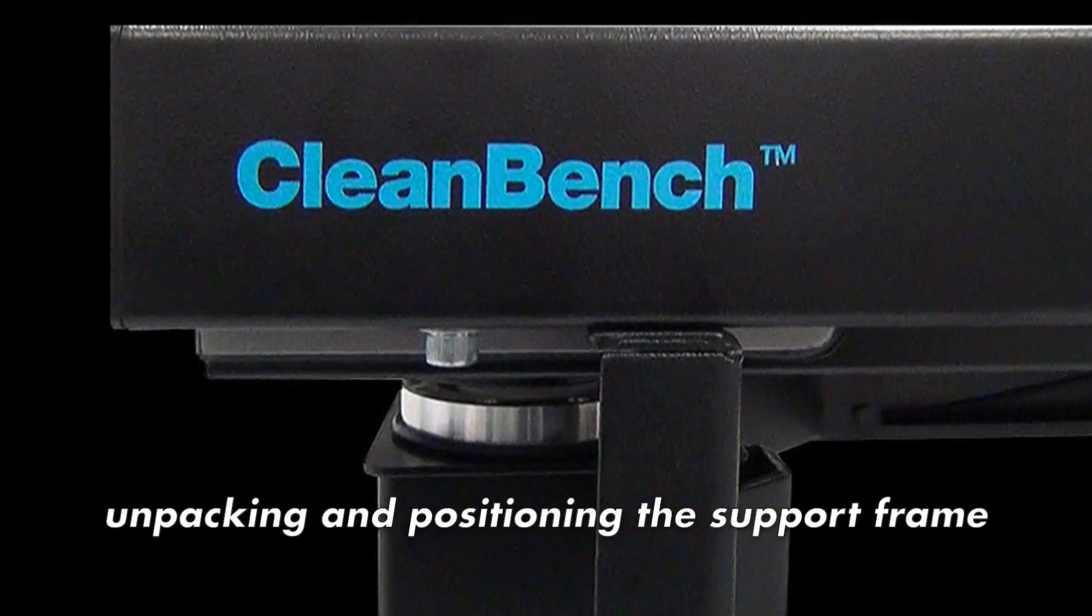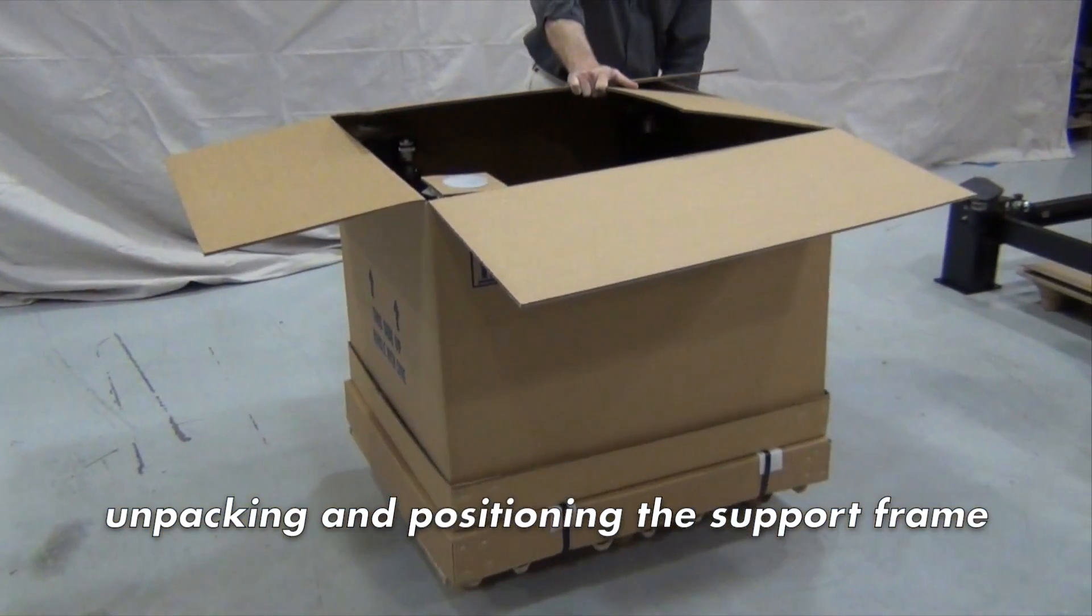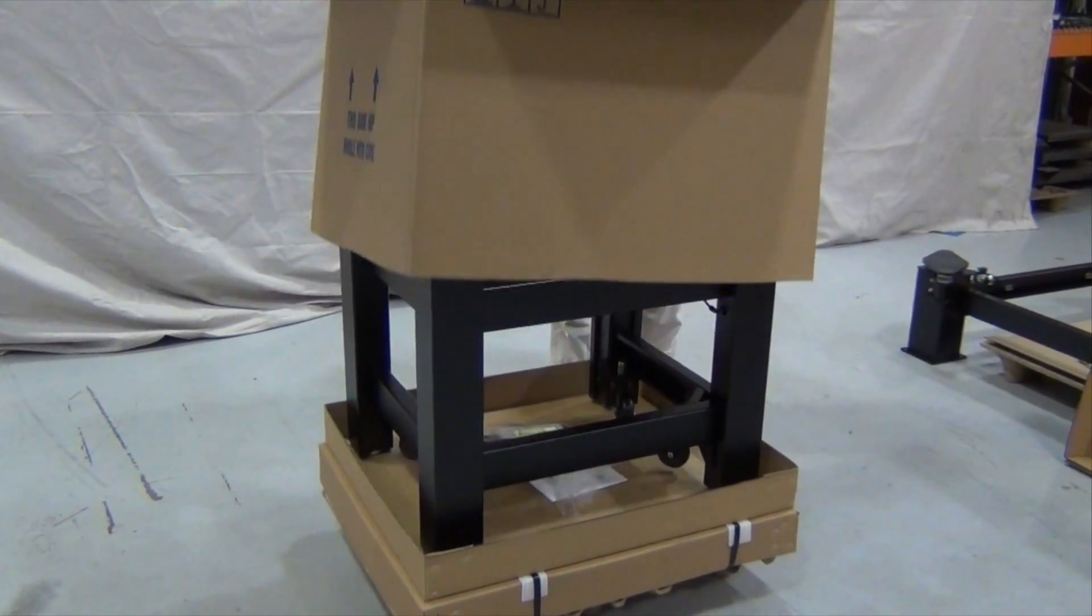Inside the box is a bag of hardware and any accessories included with the order, such as front support bars or armrest pads.